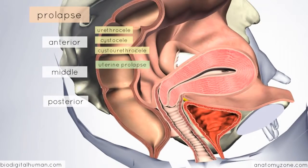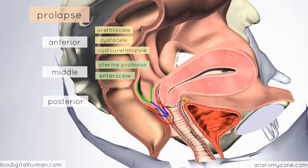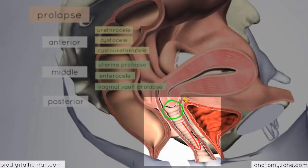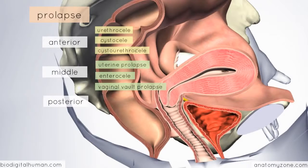Also in the middle compartment, just behind the uterus and posterior to the supravaginal region, you've got the pouch of Douglas — a pouch of peritoneum. When this herniates down, it's known as an enterocele, and it bulges into the posterior wall behind the uterus. Another type of middle compartment prolapse is vaginal vault prolapse, which occurs after hysterectomy, where the superior end of the vagina prolapses and you get inversion of the vagina. Finally, in the posterior compartment, the rectum can protrude forwards into the posterior wall of the vagina — this is called a rectocele.